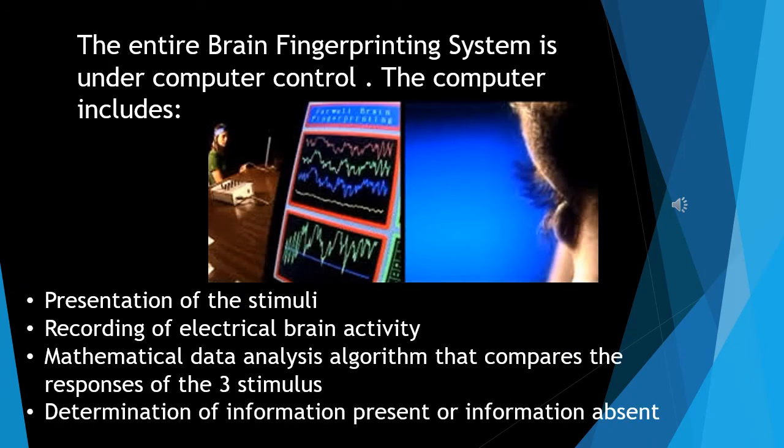The entire brain fingerprinting system is under computer control. The computer includes presentation of stimuli, recording of electrical brain activity, mathematical data analysis algorithm that compares responses of three stimuli, and determination of information present or information absent.